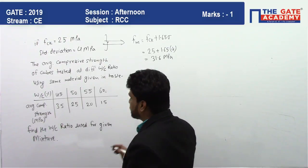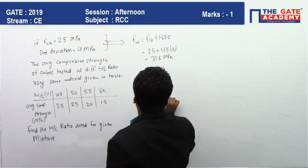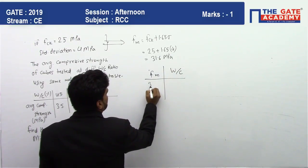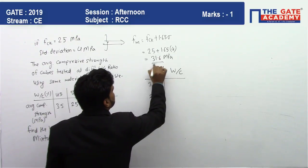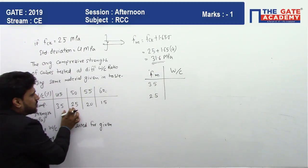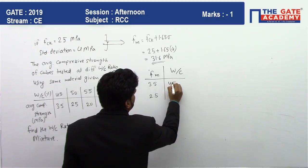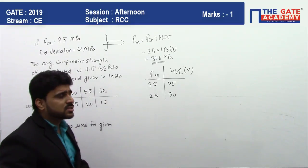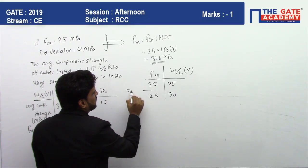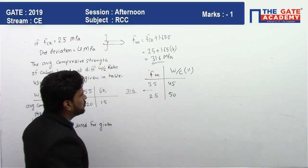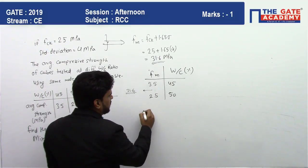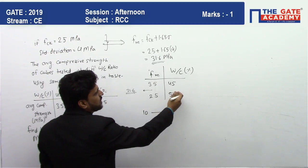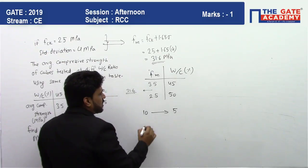So for interpolation, these are the FM values, this is the water to cement ratio value. FM value is 35 and 25 because our 31.6 will come in between this. So these two data are only useful for us. This is 45% and this is 50%. So we will do the simple interpolation for the value of 31.6. Here the difference is 10, it is increasing by 10 value, so here it is decreasing by 5%.